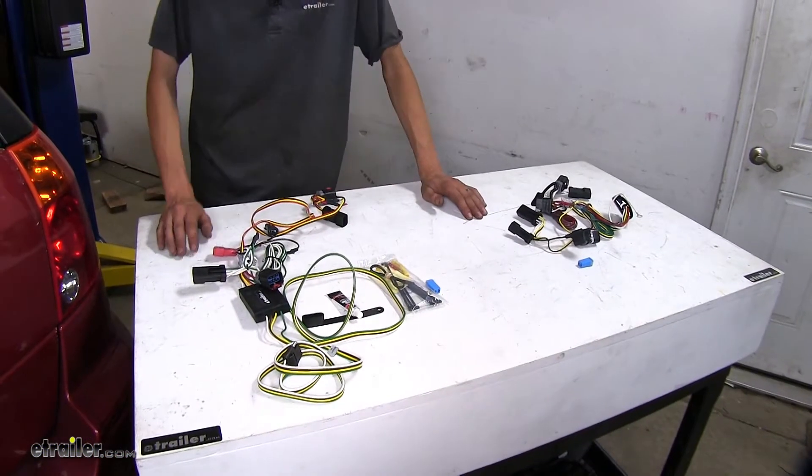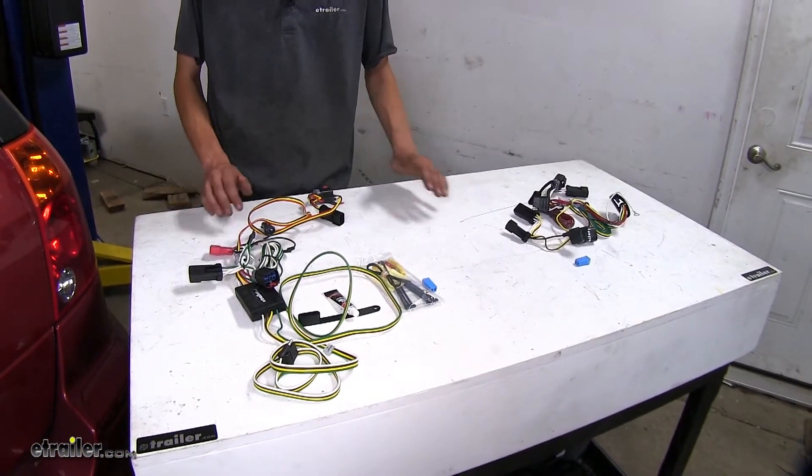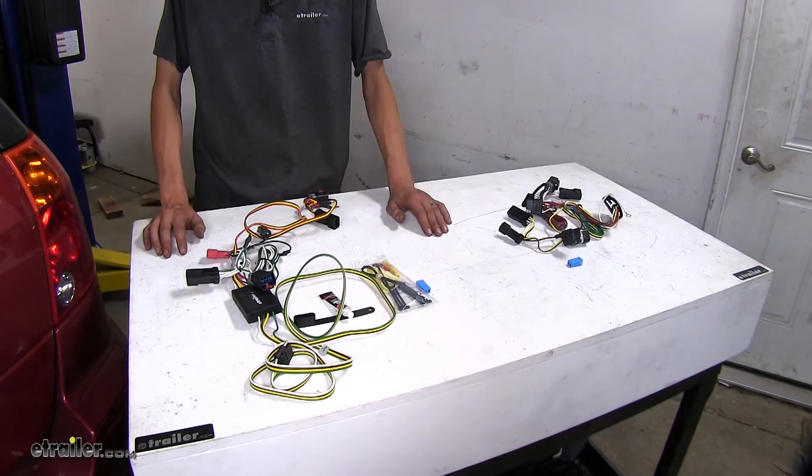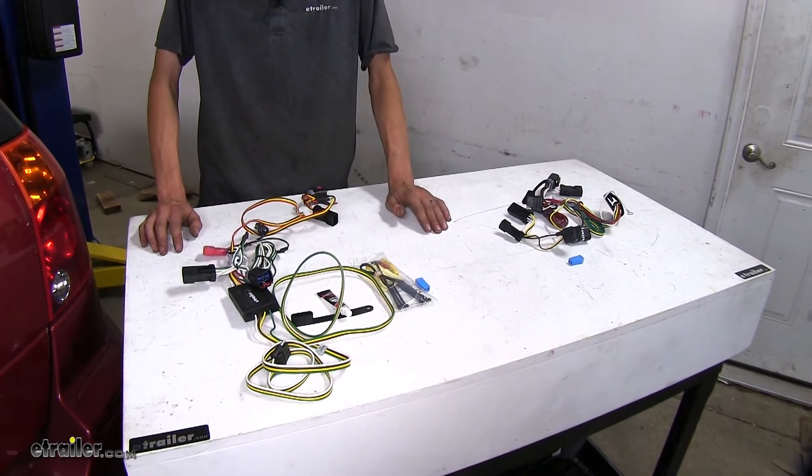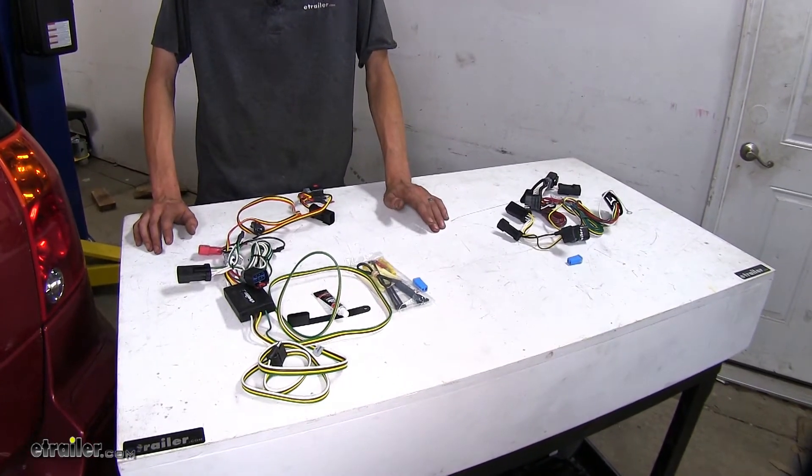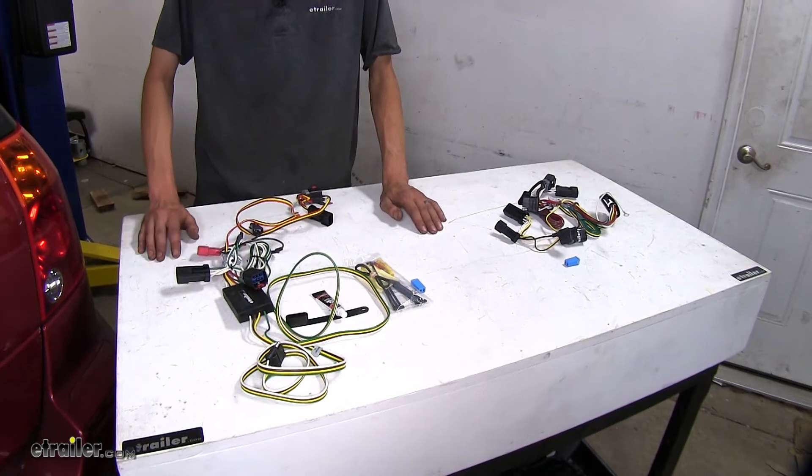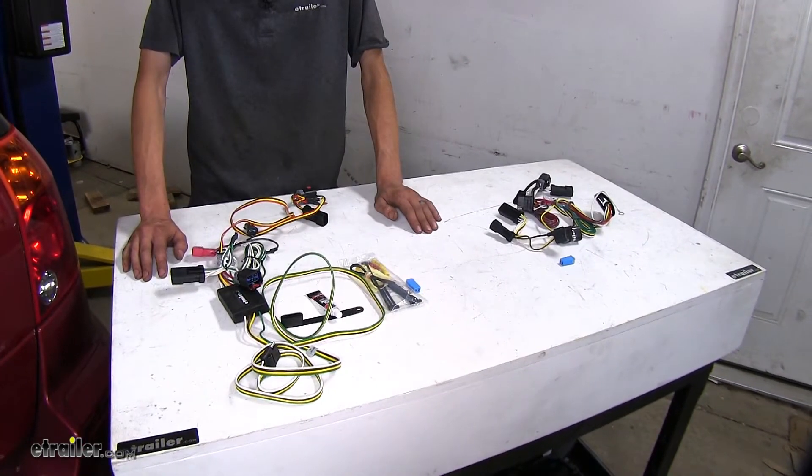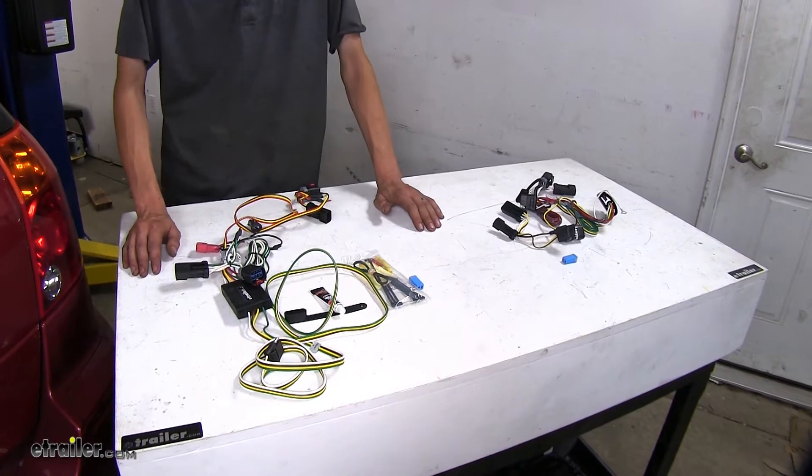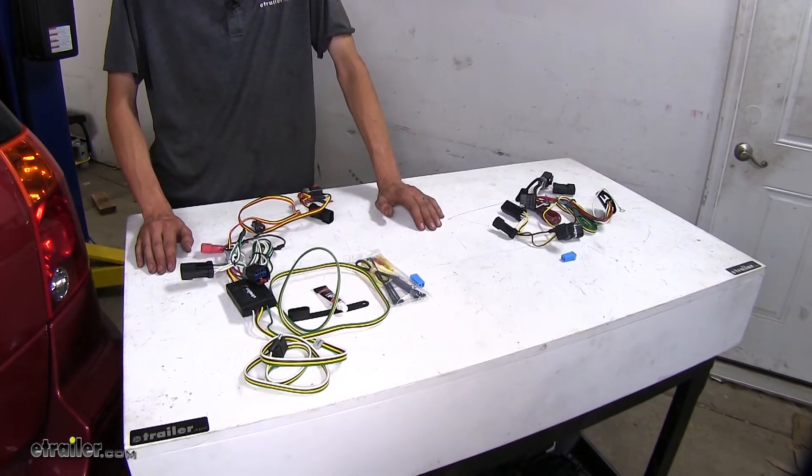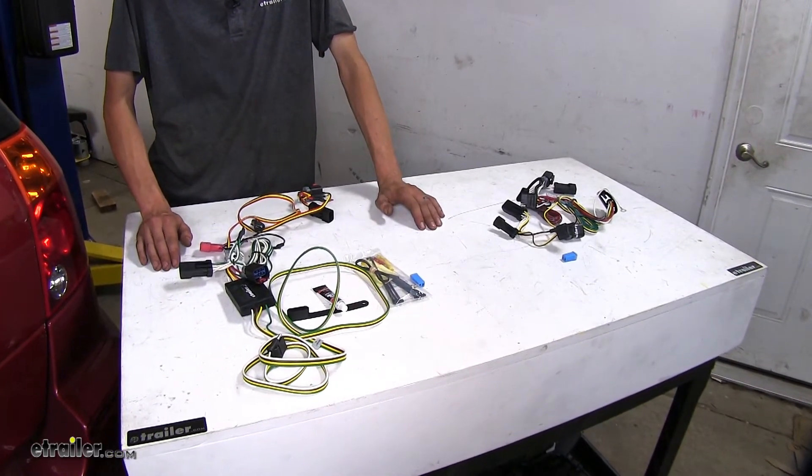Now as far as similarities go, both of these wiring harnesses install in very similar fashions. They both require no splicing, no modification to the vehicle. They're a simple plug and play. They also both give us the necessary lighting functions that are required by law in order for us to safely and legally tow a trailer.